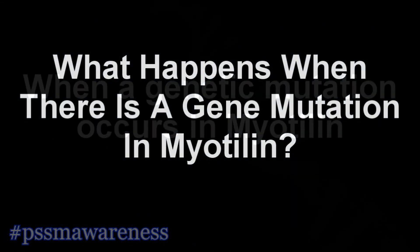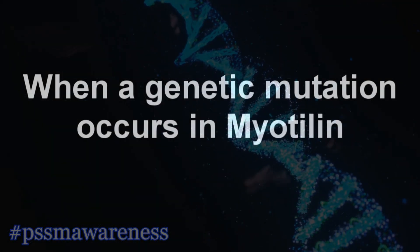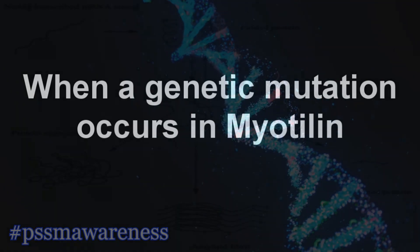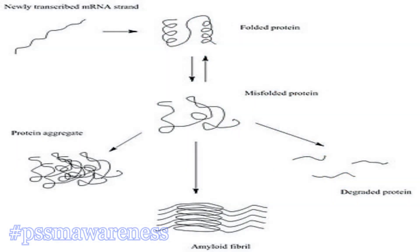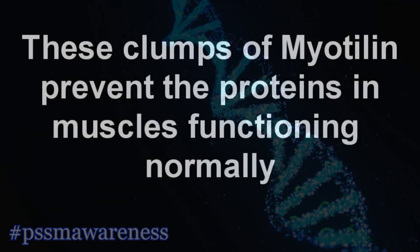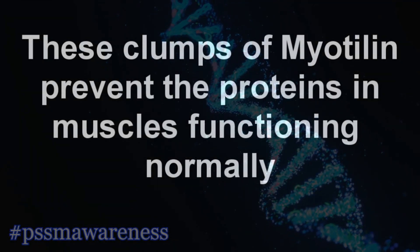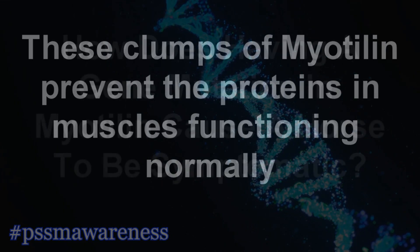What happens when there is a gene mutation in myotillin? When a genetic mutation occurs in myotillin, the mutated myotillin clusters together, causing clumps which are also known as aggregates. These clumps of myotillin prevent the proteins in muscles from functioning normally.